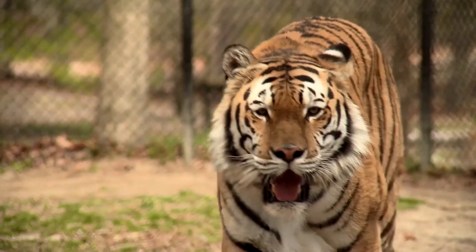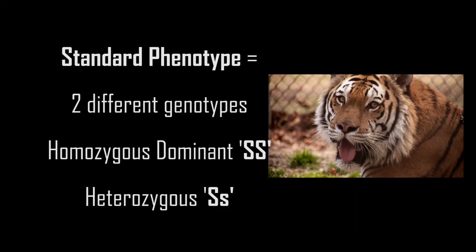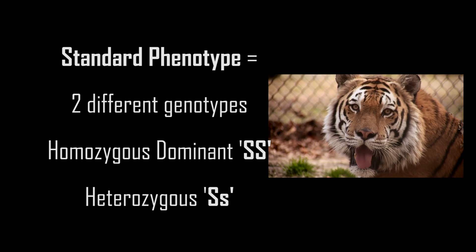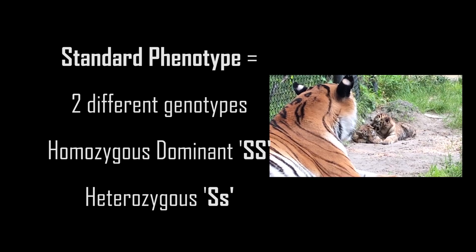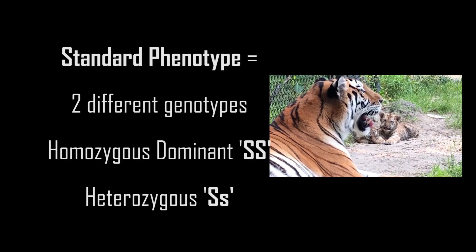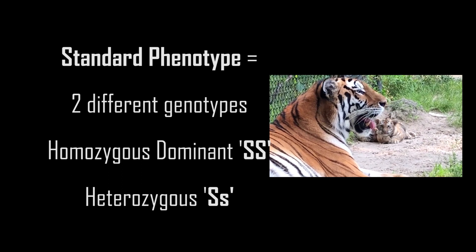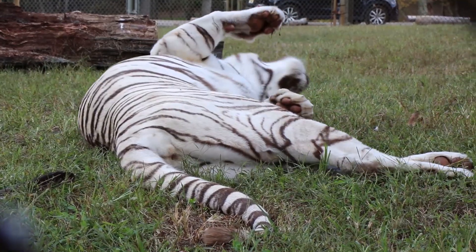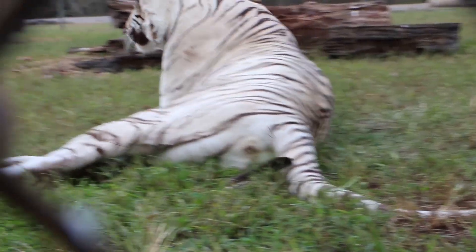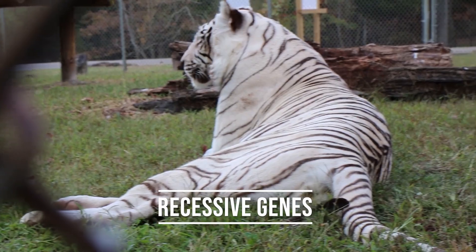Because this trait is dominant, animals with a standard phenotype can have two different genotypes: two dominant alleles, or one dominant and one recessive allele. The rest of the variations are rare because they are created by recessive genes.